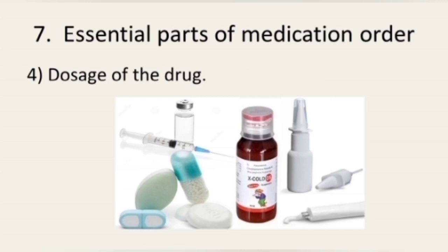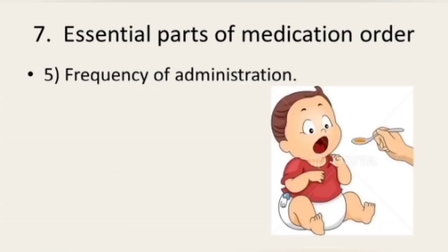The next essential part is the dose of the drug. The medication order should include the amount, the time or frequency of administration, and in many cases the strength too. For example: tetracycline 250 mg four times a day, or potassium chloride 10% 5 ml three times a day with meals.